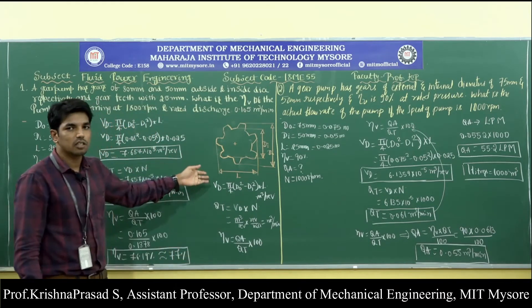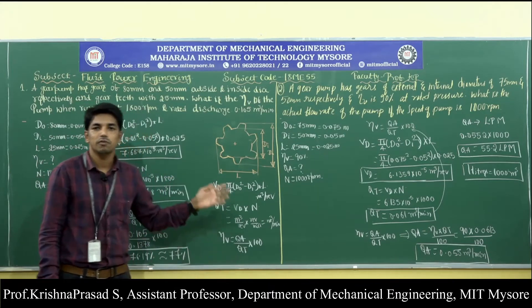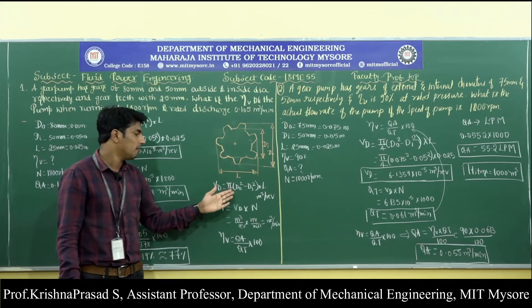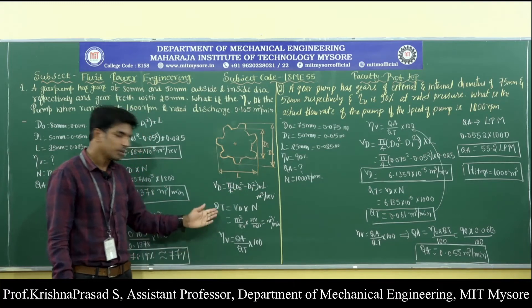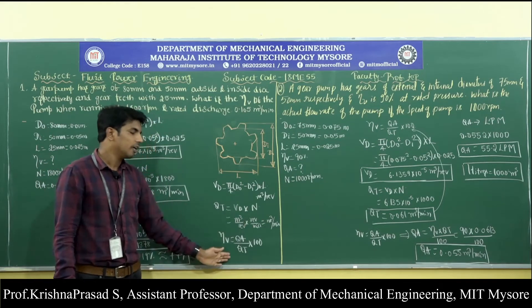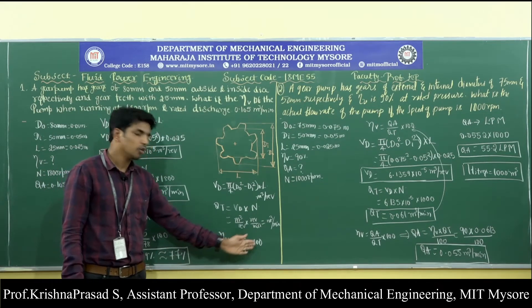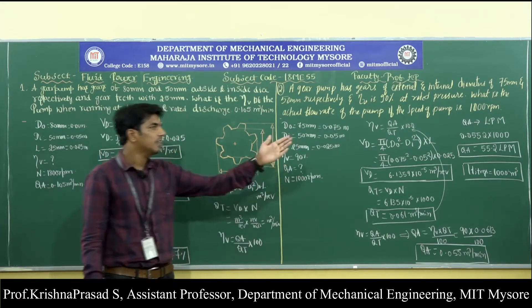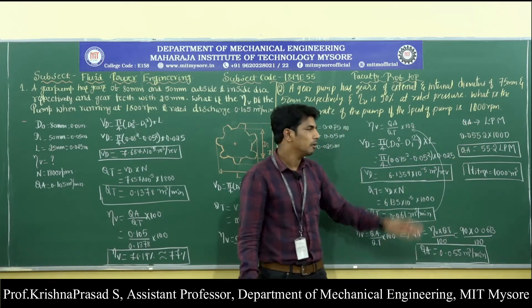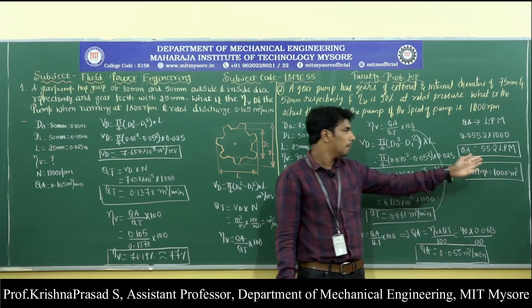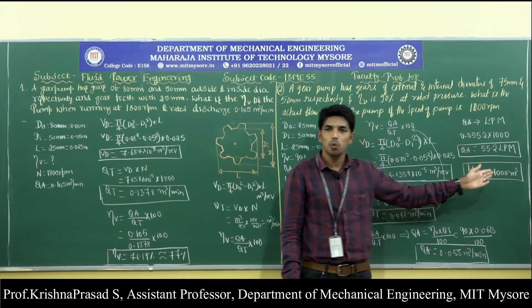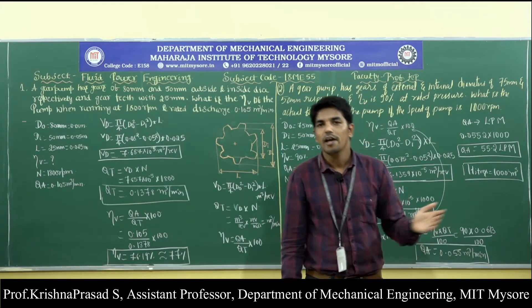Summary for external gear pump numericals: first find volumetric displacement using the hollow cylinder formula VD = (π/4)(D0² − Di²)L, then theoretical flow rate QT = VD × N, then volumetric efficiency η_v = (QA/QT) × 100. In problem 2, converting 0.055 m³/min to liters per minute by multiplying by 1000 gives 55.2 LPM.